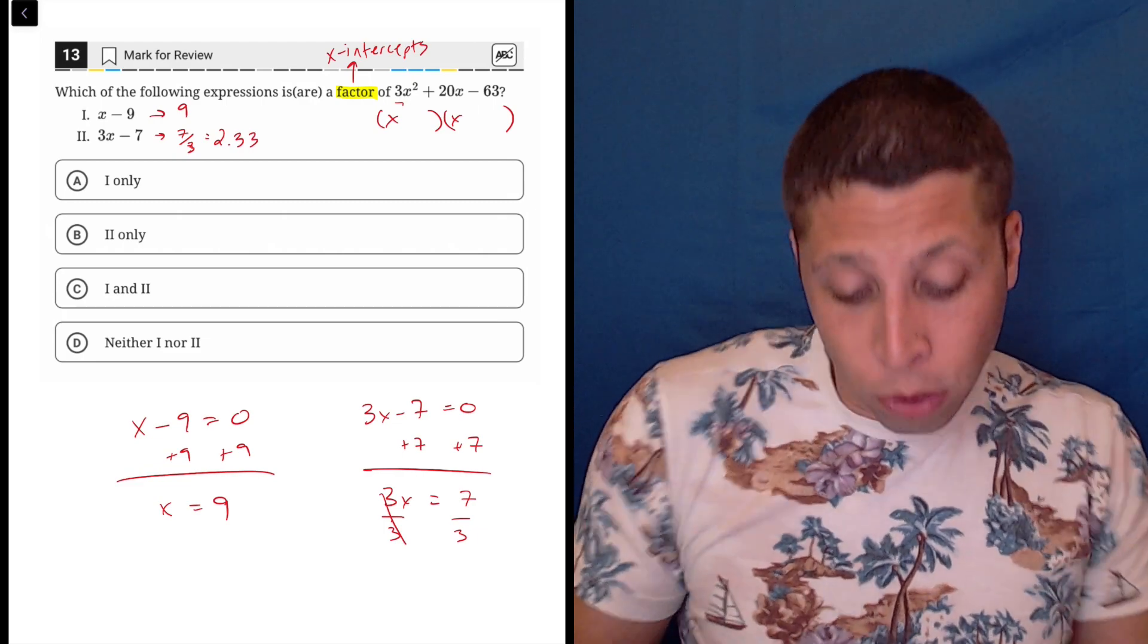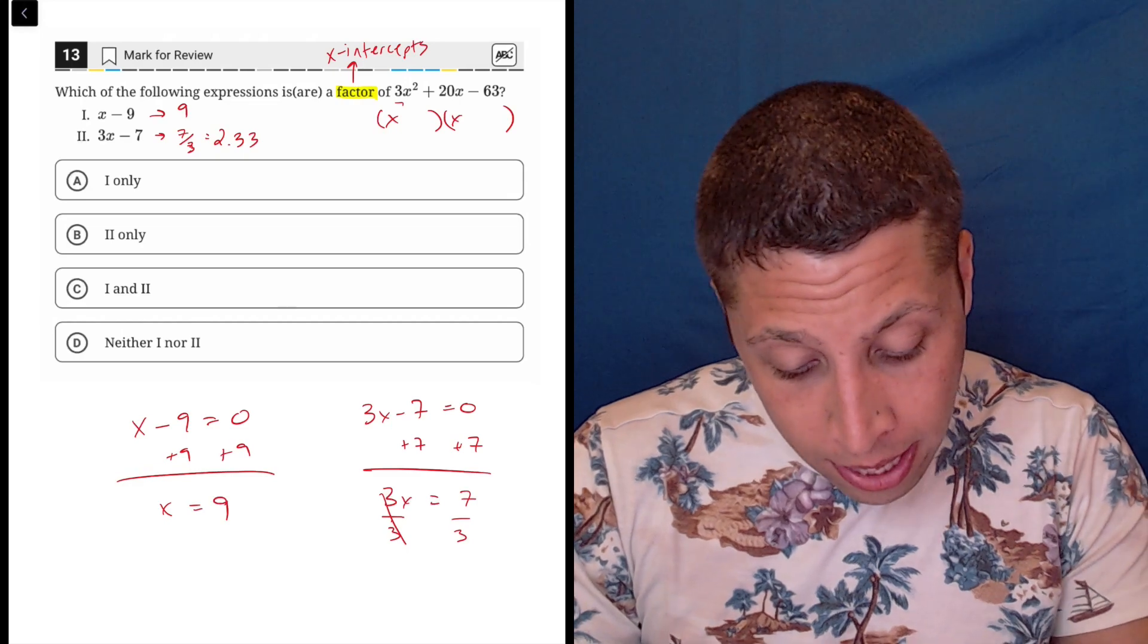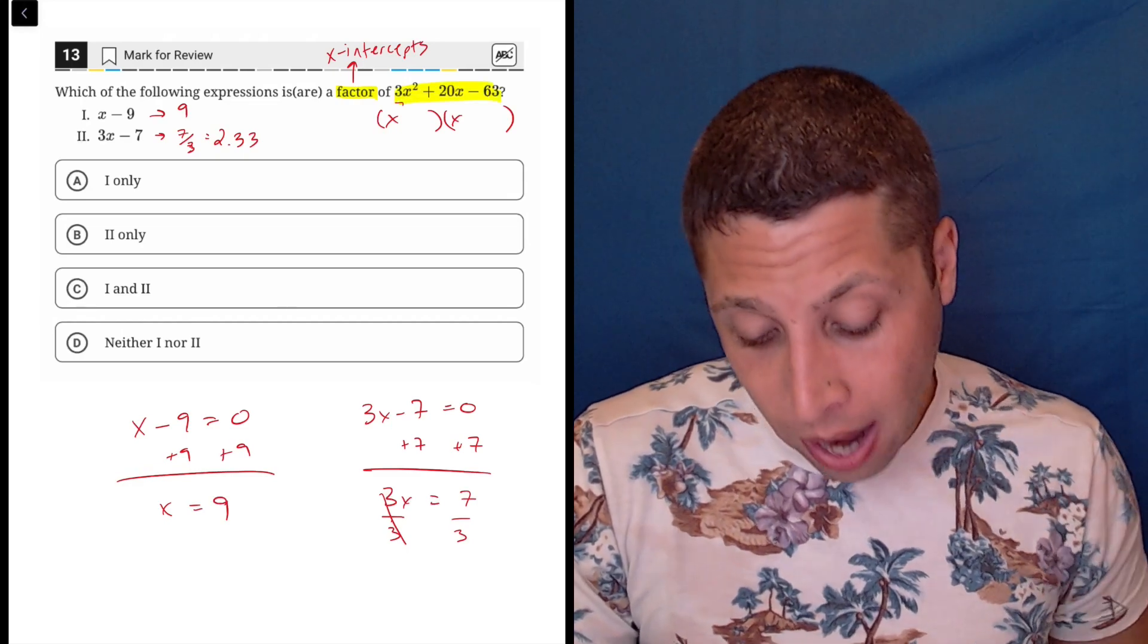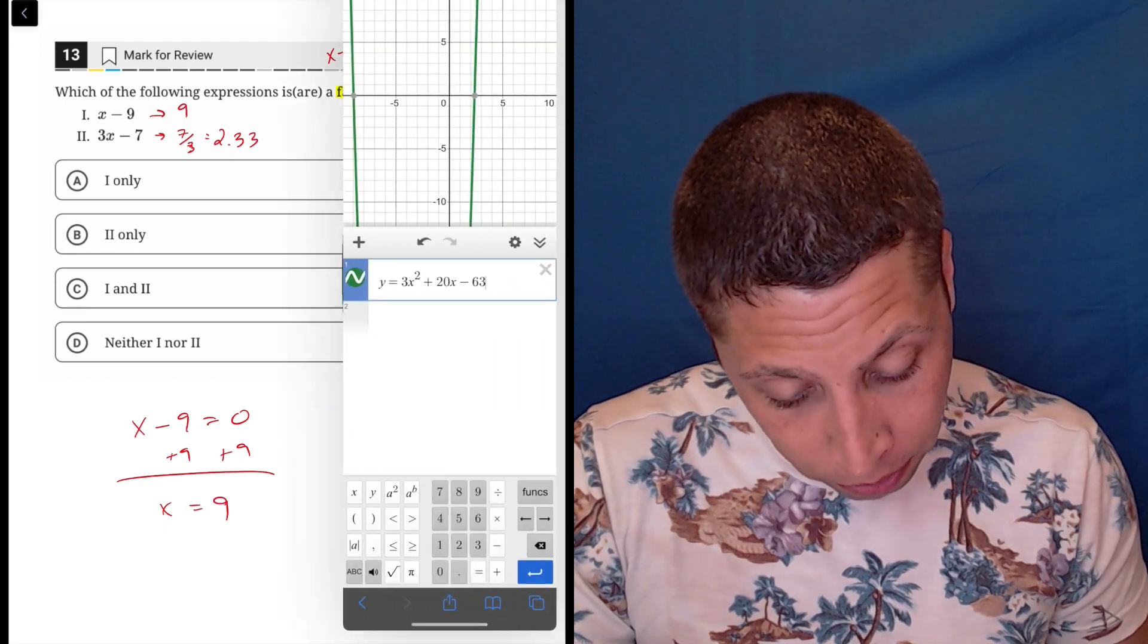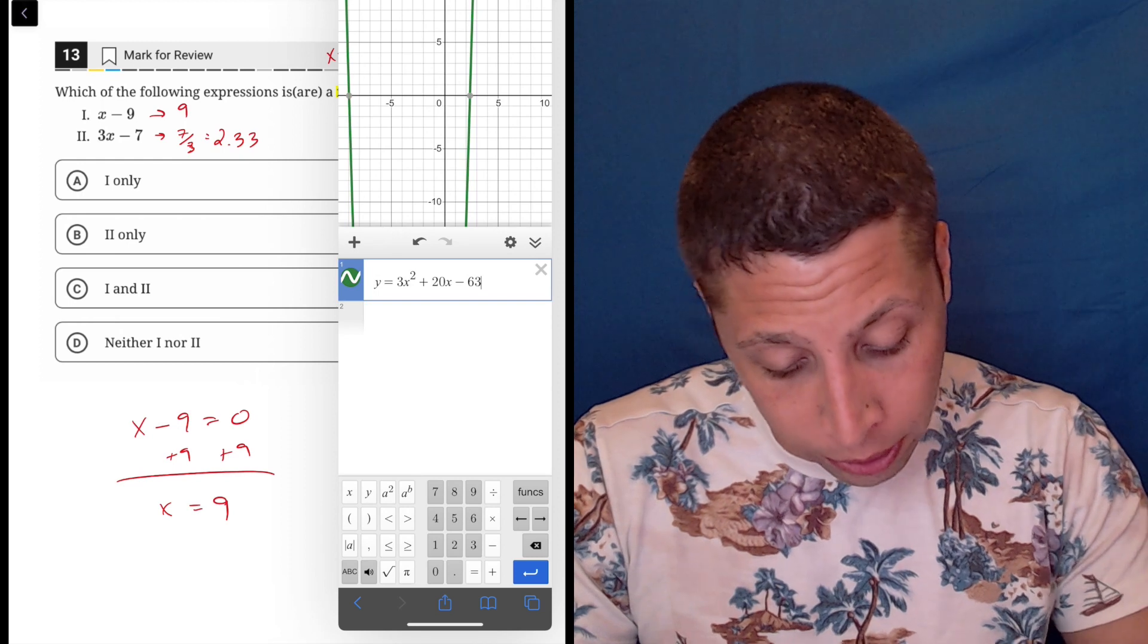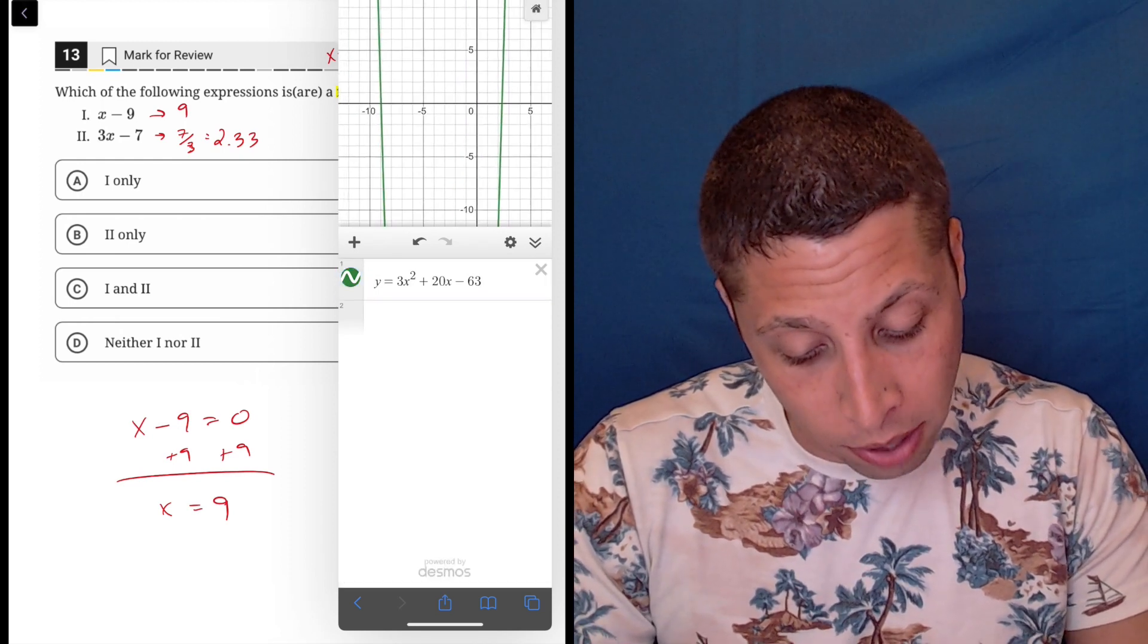So what I'm going to do is I'm going to graph this thing as is and see if it crosses the x-axis at these points, 9 and 2.33. So I graphed it already for us. Some of it is off the chart, but that's okay. I only really care about these points where it crosses.